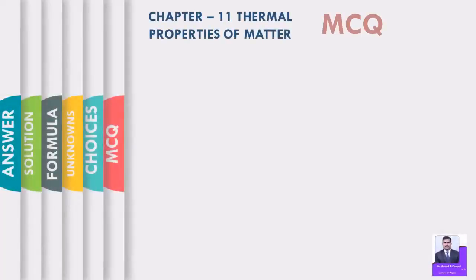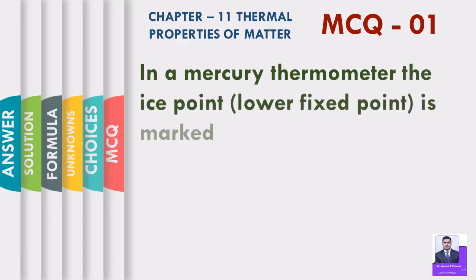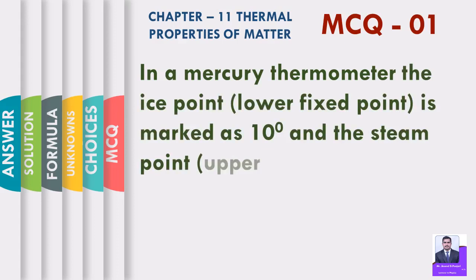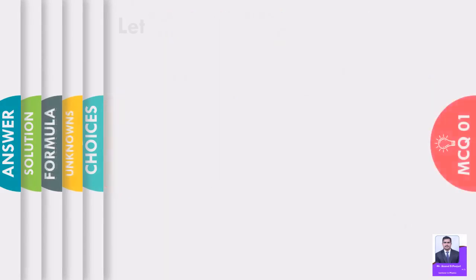Chapter 11 Thermal Properties of Matter MCQ 01. In a mercury thermometer, the ice point, lower fixed point is marked as 10 degree and the steam point, upper fixed point is marked as 130 degree. At 40 degree Celsius temperature, what will this thermometer read?